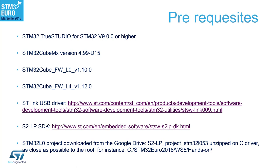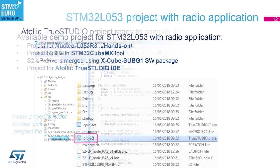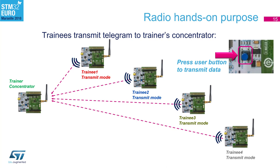You should have downloaded the S2LP project for STM32L053 from Google Drive before this presentation. Unzip it and we will open it together — I recommend unzipping into a repository close to the C drive. The purpose today is to use the L0 project and then migrate to L4. You will have your board on your side running a simple transmitter application — press the button to transmit a message to us, and you can customize that message. On our side we will act as a concentrator and sniff all messages in the room.